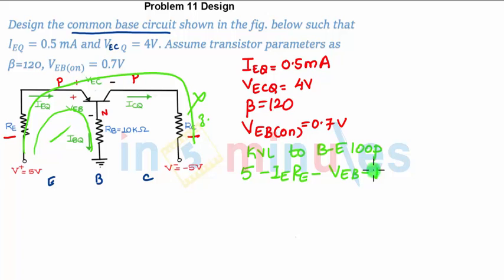They have given the value of IE in the equation, so we can find IB. How to find IB if IEQ is given? I can write IB as IEQ divided by 1 plus beta. Why we are writing IEQ? It is the value of emitter current at Q point, so Q is the suffix. So you can find IB value from here as 4.13 microampere.